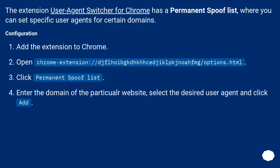The extension User Agent Switcher for Chrome has a permanent spoof list where you can set specific user agents for certain domains. Configuration: Add the extension to Chrome. Open the extension options page. Click 'Permanent Spoof List', enter the domain of the particular website, select the desired user agent, and click Add.